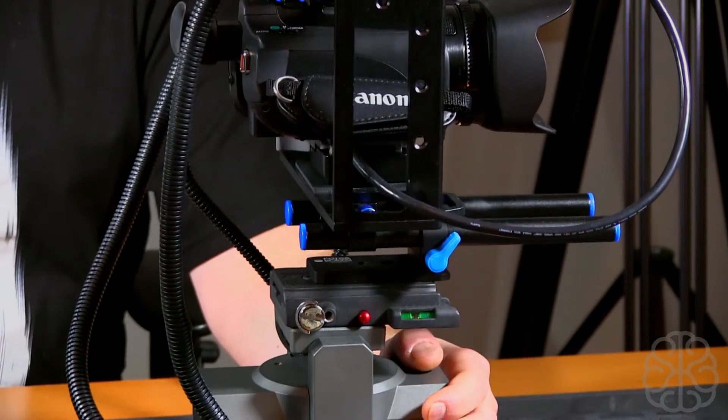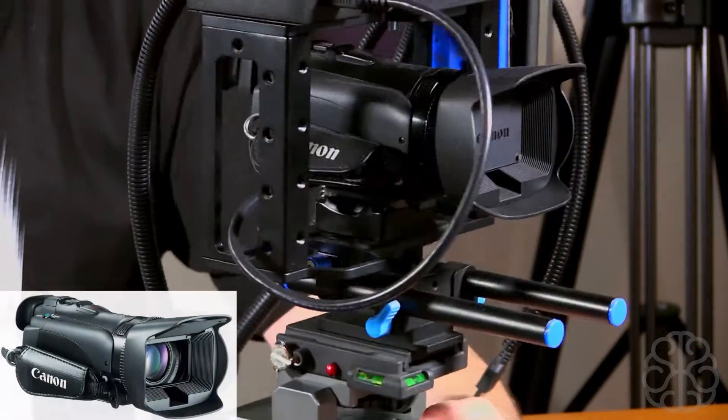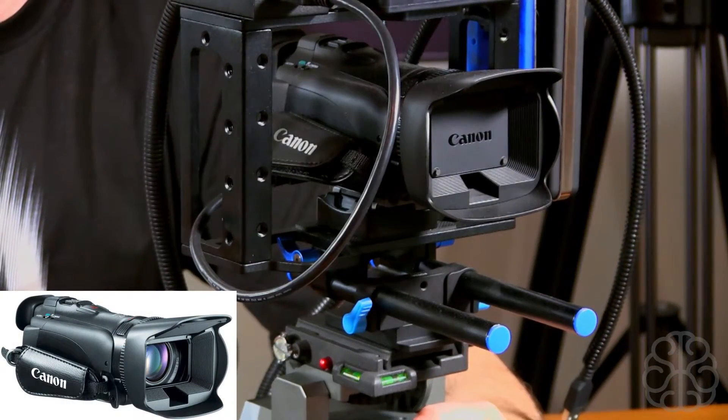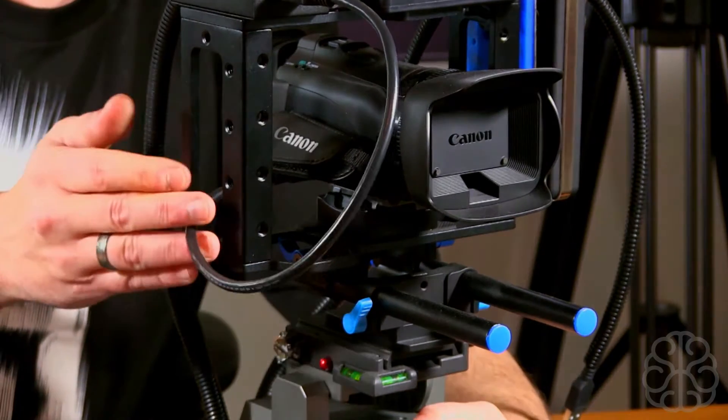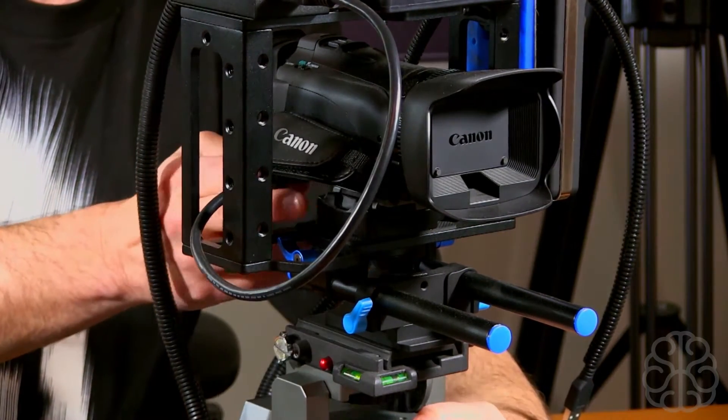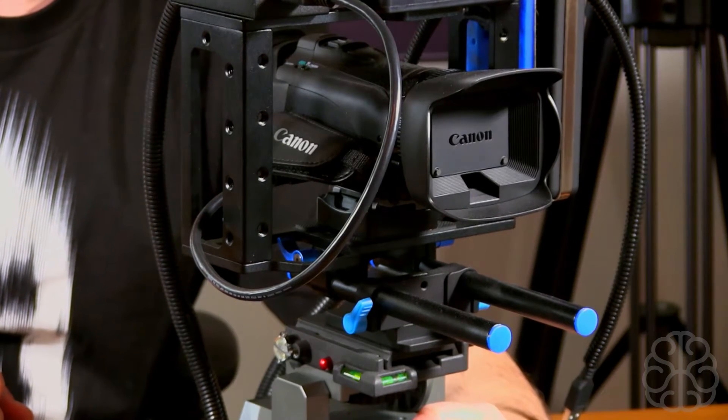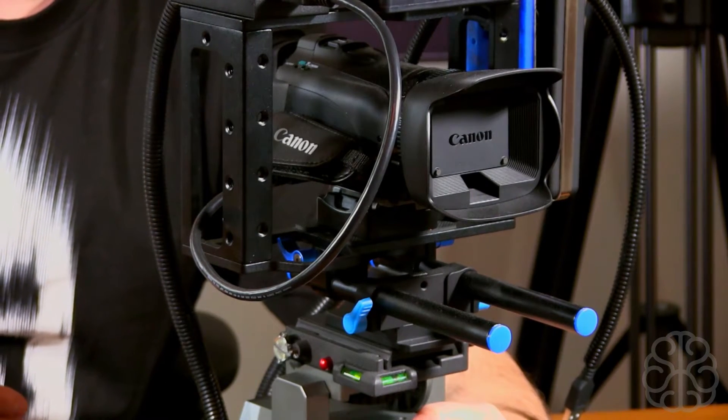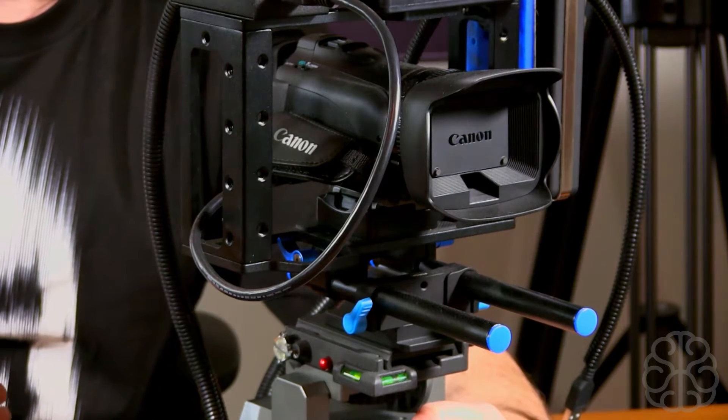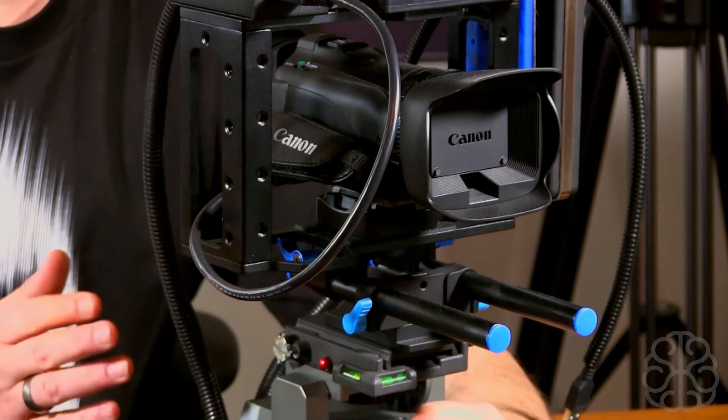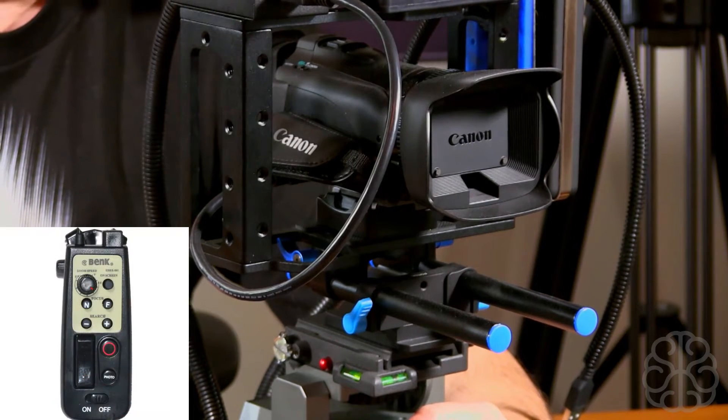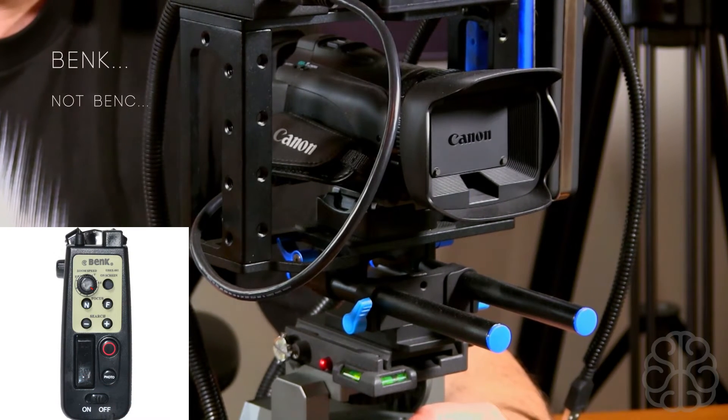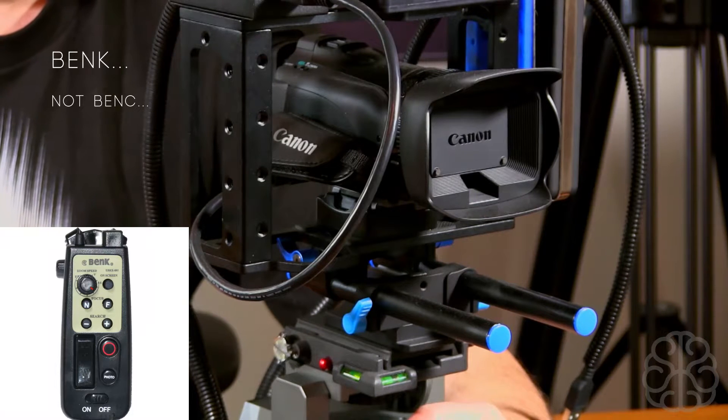Our camera setup we're using on top of this is the Canon Vixia G20 camcorders. These guys have an HDMI out and they also have a LANC port. A LANC port enables you to actually zoom in, zoom out, adjust focus with a remote. We bought a cheap remote from Banc, B-E-N-C, LANC remote, I think it was like 30 bucks.